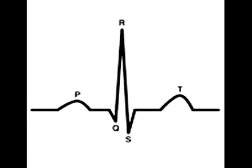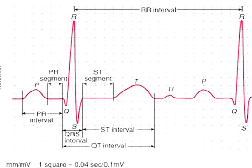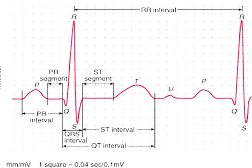U wave you do not usually see on EKG. Now let us see some of the intervals. These are important because they change in various diseases. For example, PR interval changes in heart blocks, and RR interval changes in bradycardia and tachycardia.